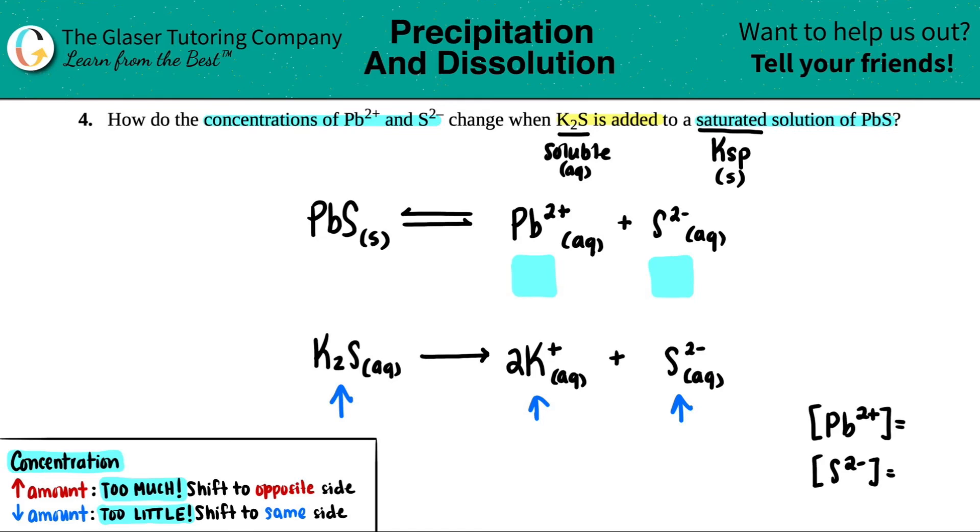So this goes with this, because they're the same. This is called the common ion effect. The common ion effect, which we will probably see, probably in a different section. But the common ion effect is basically when you're adding a soluble salt with something that's saturated or insoluble, one of the ions will match. If you see a matching ion, that's the common ion effect. So we know already one answer. We know that the sulfide ion, the S²⁻, is going to increase.